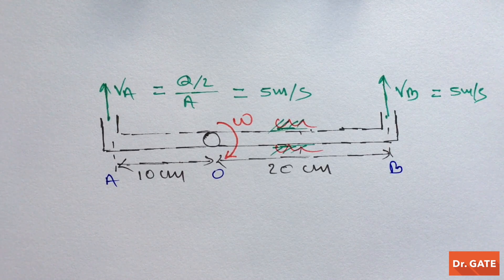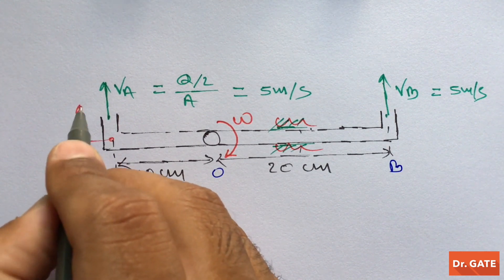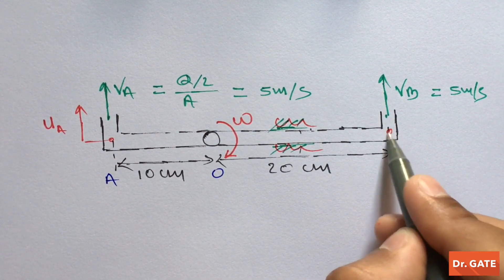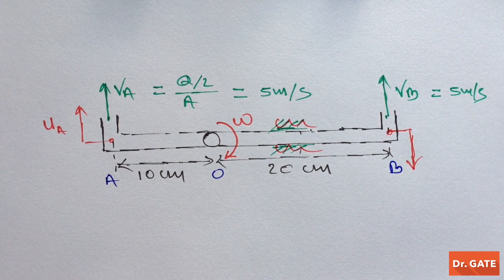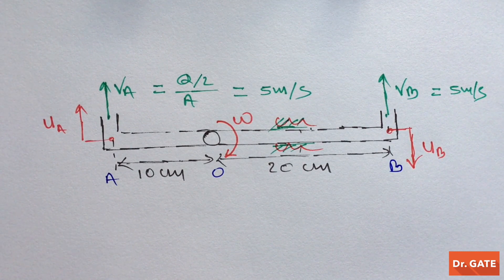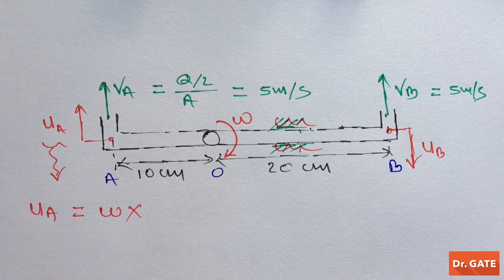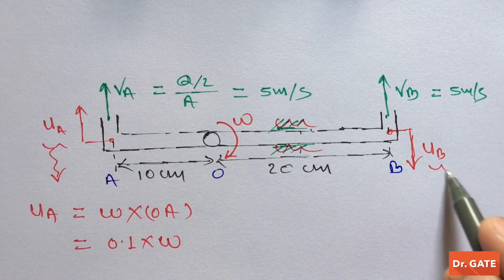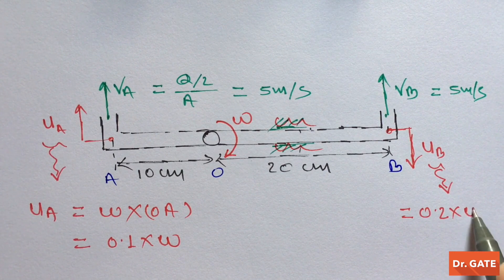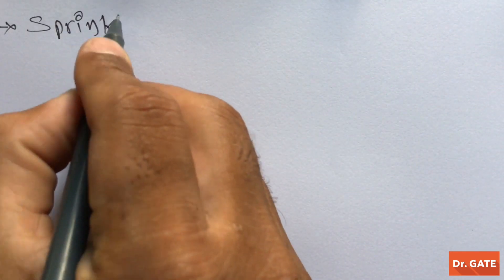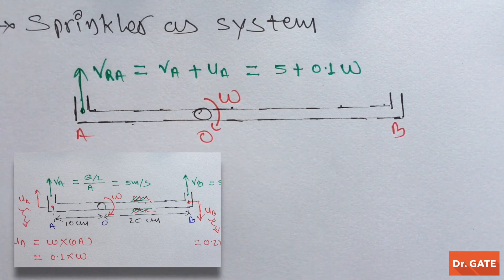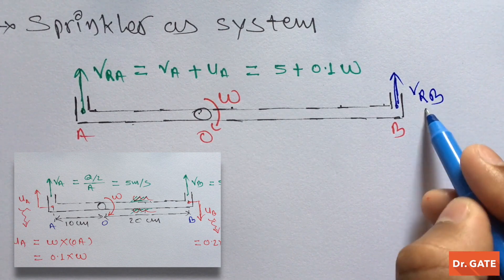Let's consider the angular velocity of rotation. Because of this angular velocity, point A on the sprinkler will acquire a tangential component of velocity U_A, and similarly point B acquires tangential velocity U_B. Mathematically, U_A is omega into the distance of that point from the axis of rotation, coming out to 0.1 times omega. Similarly, U_B is 0.2 times omega. If we take the sprinkler as our system, the relative velocity of discharge at point A and point B can be written accordingly.